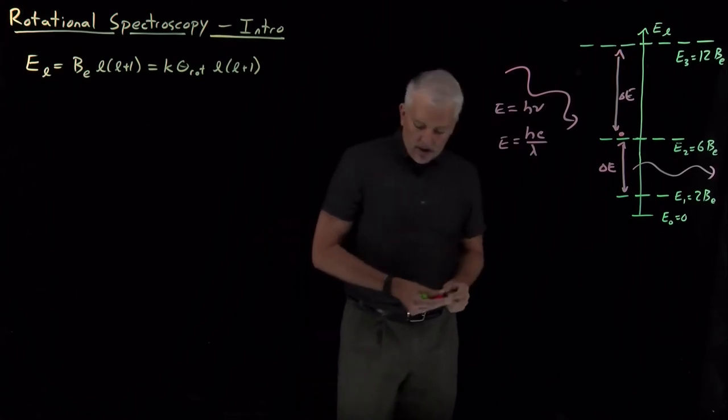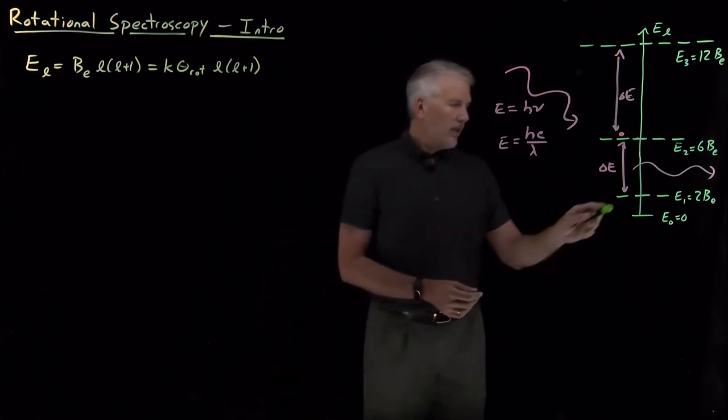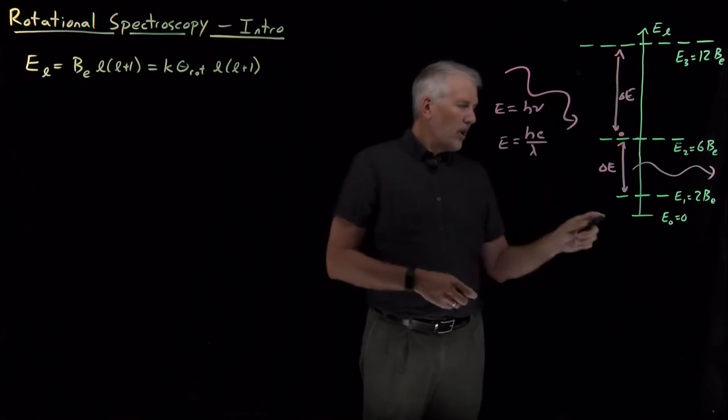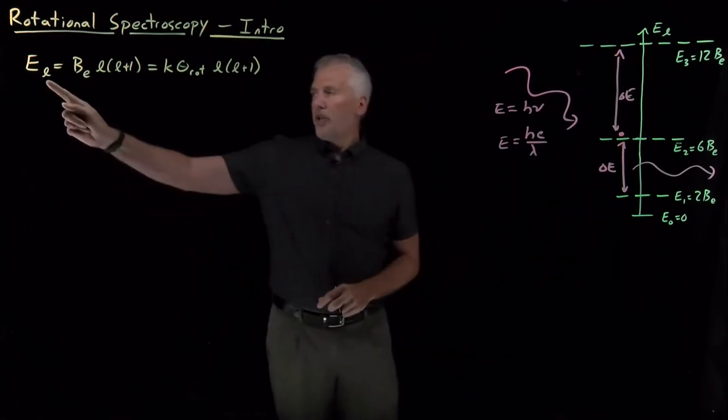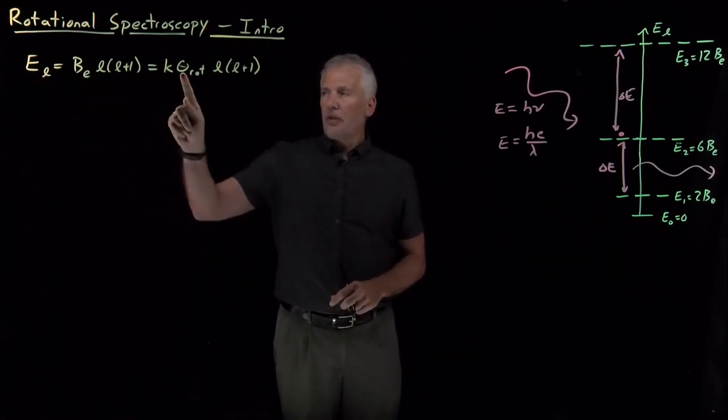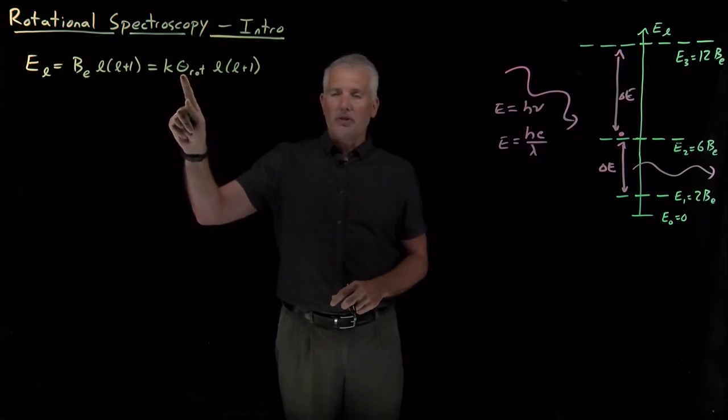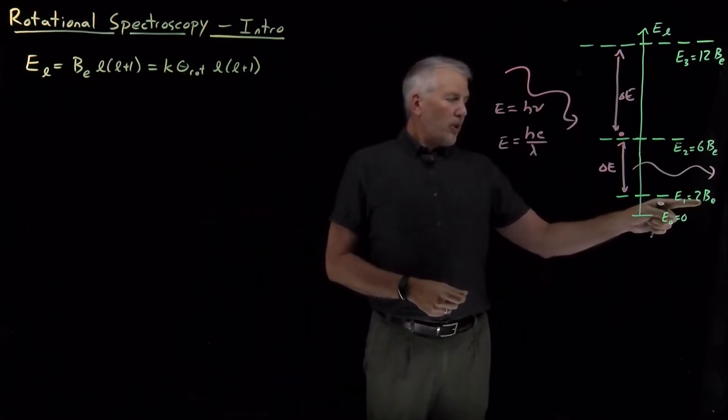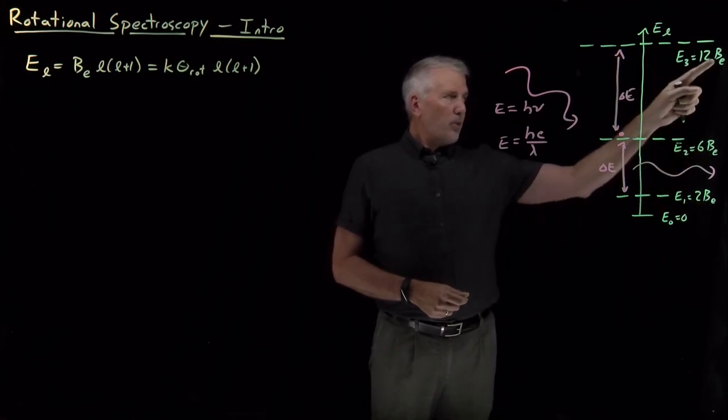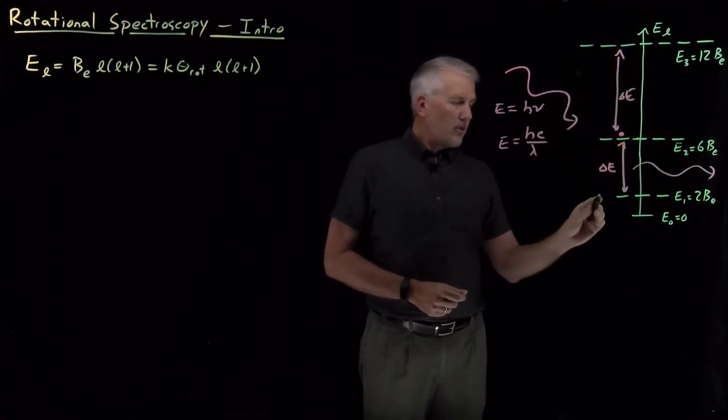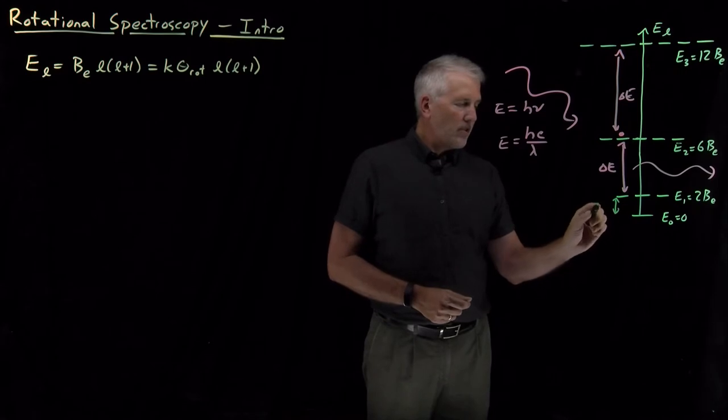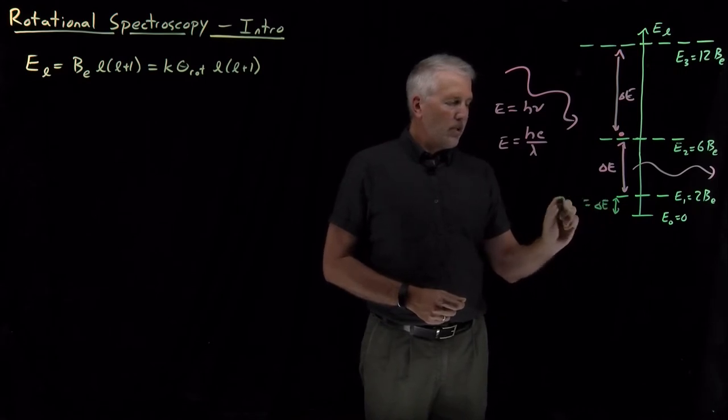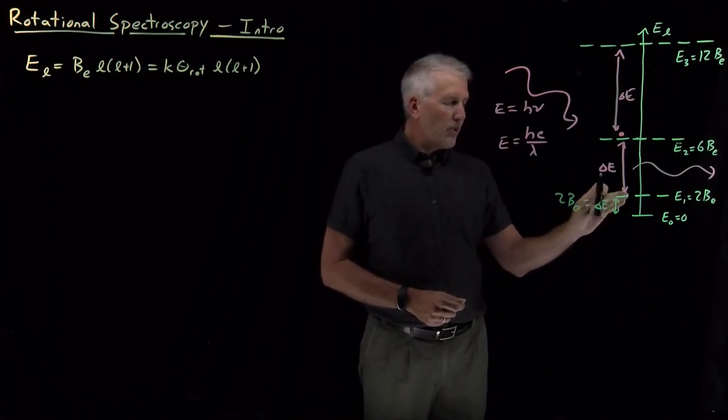So first let's take a look at these energy differences. We know when we've written the energies either in terms of a rotational constant or sometimes if we prefer a rotational temperature, the energy levels are either zero or twice the rotational constant or six times or twelve times or twenty times and so on. So the gaps between those energy levels, this delta E, would be twice the rotational constant, 2BE minus zero.